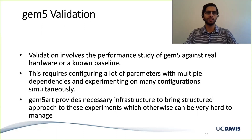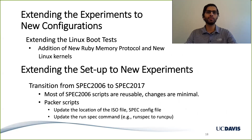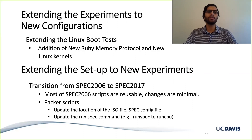With Gem5Art, we want to have a setup which can easily be extended to other experiments. We rely on launch scripts to interact with Gem5Art, and extending experiments to new configurations simply requires updating those launch scripts. For example, if you want to update your Linux boot tests to new Ruby memory protocols or new Linux kernels, all you have to do is update your launch script to add these new entities once you've created the artifacts. This usually takes just a couple of minutes before you can launch your jobs.